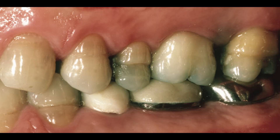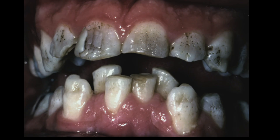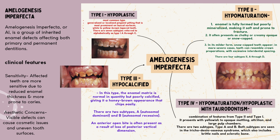Amelogenesis imperfecta, or AI, is a group of inherited enamel defects affecting both primary and permanent dentitions. Type I: hypoplastic — this is the most common type. Reduced enamel matrix leads to thin but well-mineralized enamel, which can appear smooth or rough with pitting. Clinically, the enamel demonstrates variable patterns including generalized or localized pinpoint pitting, most prominent on buccal surfaces, to smooth and rough changes with white to yellow-brown tapered teeth. There are seven subtypes, referred to alphabetically as type IA through G: four are autosomal dominant, two autosomal recessive, and one X-linked dominant.